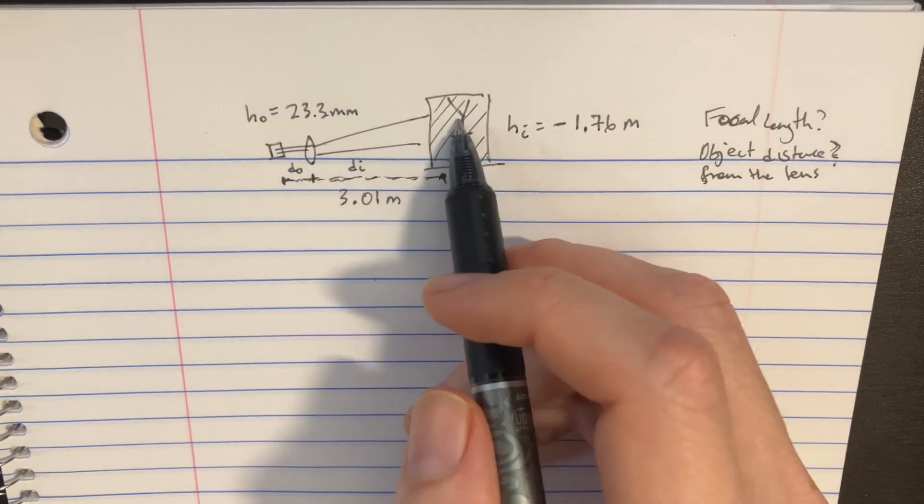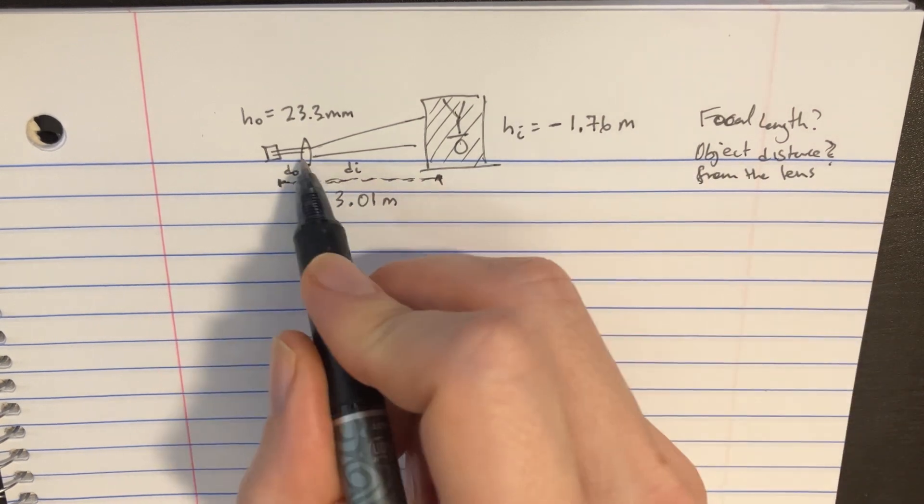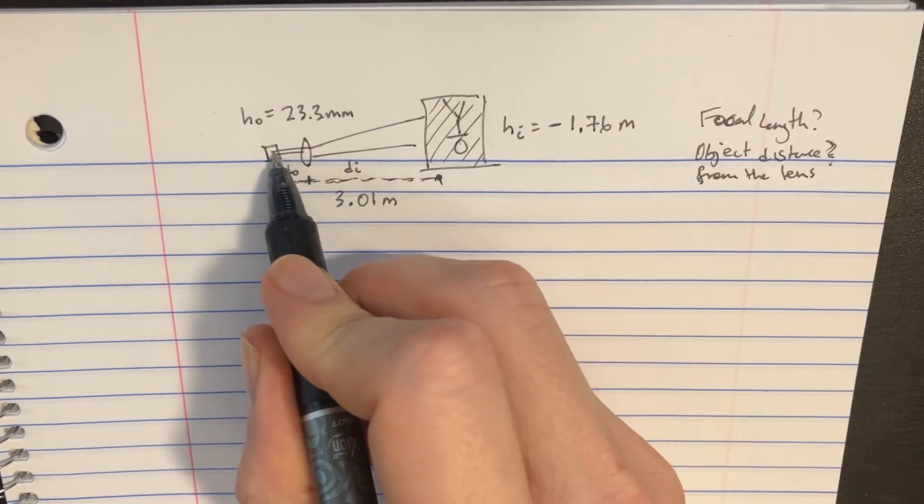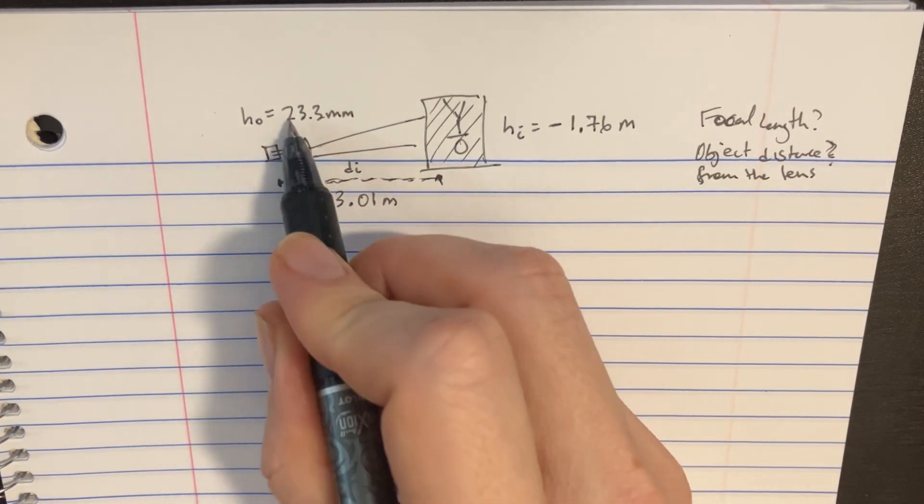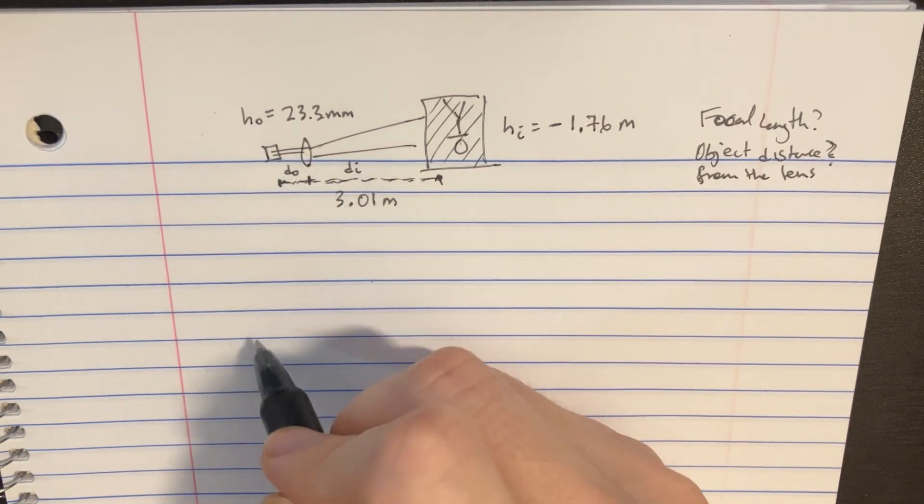This lens is projecting a slide onto a screen. Now the image is inverted, but we're trying to figure out how far away that lens is from that slide. So in order to do that, we should see that we have HO, HI, DO, and DI.